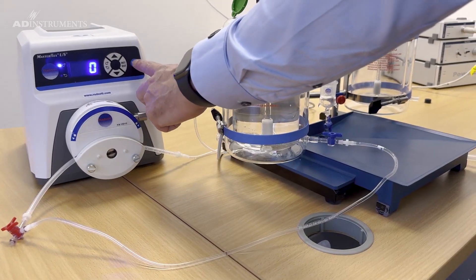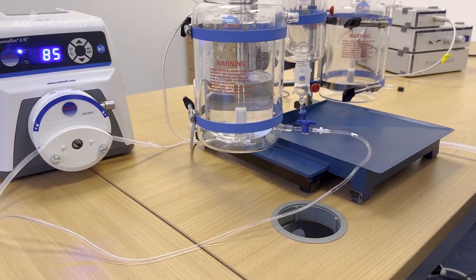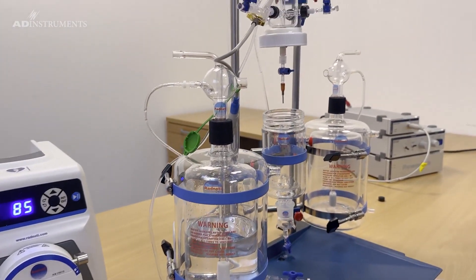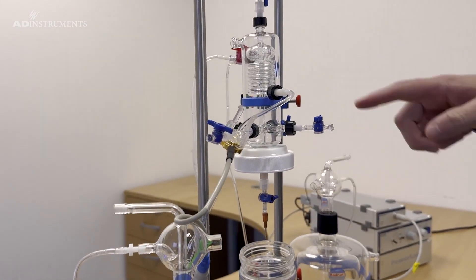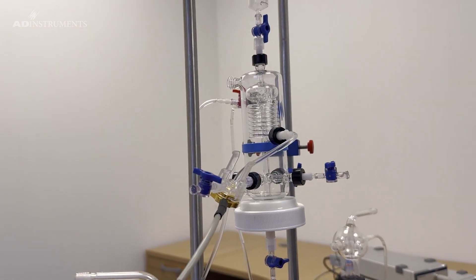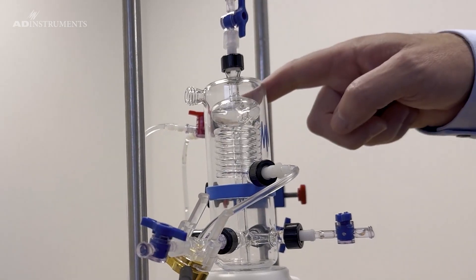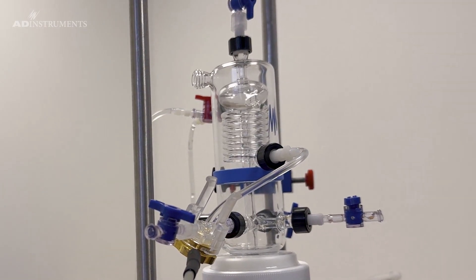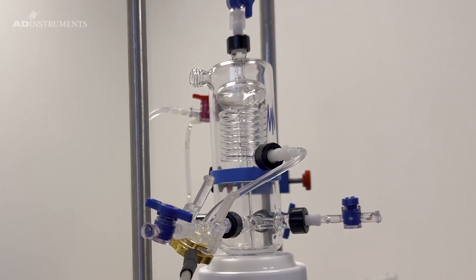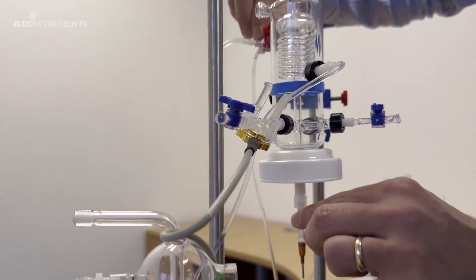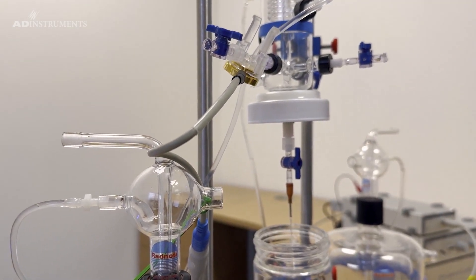Next we start the pump. Make sure you use sufficient flow. We use 85 rpm on this pump. You'll see the coil is filling up and so is the bubble trap. As soon as it hits the overflow it will flow back to the reservoir. Once this happens we can close off the overflow and open up the cannula.